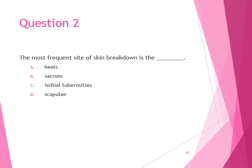The most common site for pressure ulcers is the sacrum at 35%, followed by the ischial tuberosities at 16%, heels at 11%, trochanter at 7%, ankles at 3%, and scapula at 2%.